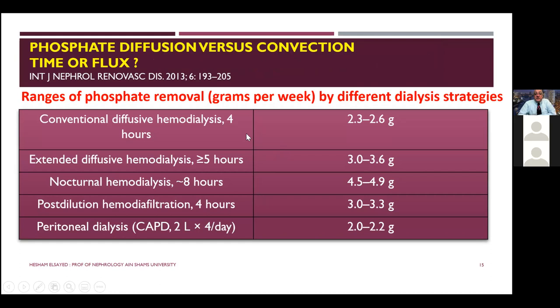Considering phosphate: diffusion versus convection depends on time or flux. Phosphate is not a large molecule, but it is mainly removed by diffusion; convection increases removal somewhat. However, the only way to maximally remove phosphate is by extended hemodialysis — more than five hours — or nocturnal hemodialysis. Post-dilutional HDF removes slightly more phosphate than low-flux or high-flux dialysis due to a compartmental effect: the majority of phosphate is outside the blood compartment, so more time is needed rather than higher permeability.